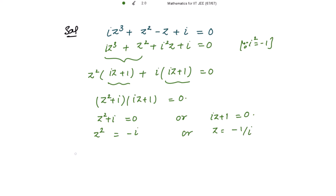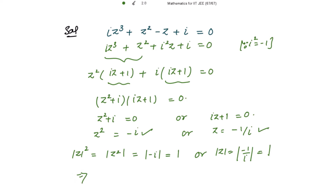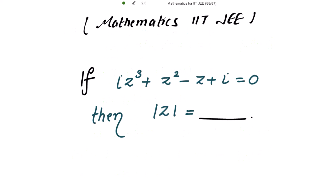To find |z|, from the first case: |z²| = |-iota| = 1, so |z| = 1. From the second case: |z| = |-1/iota| = 1. Both cases give |z| = 1, so the absolute value of z is 1.